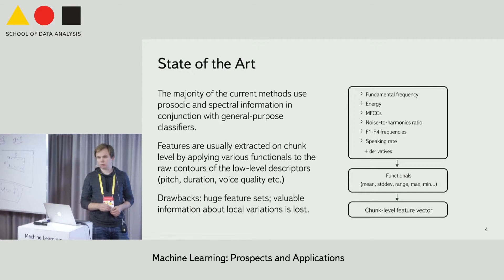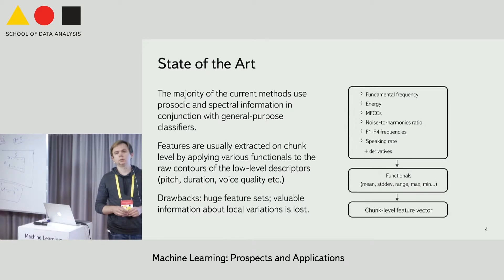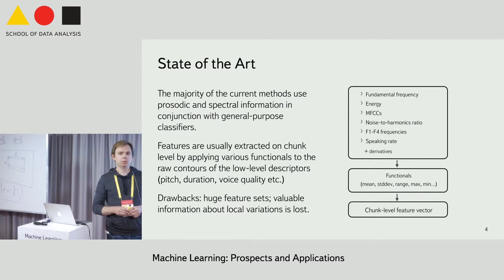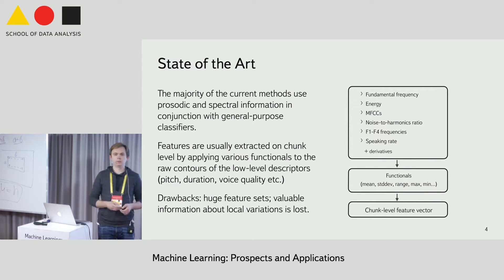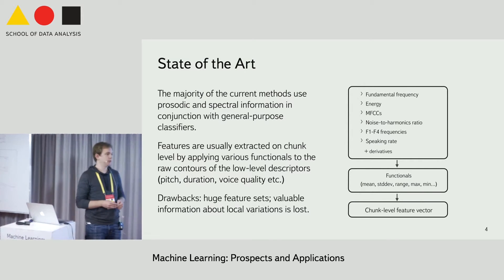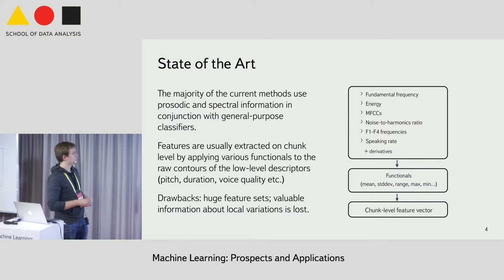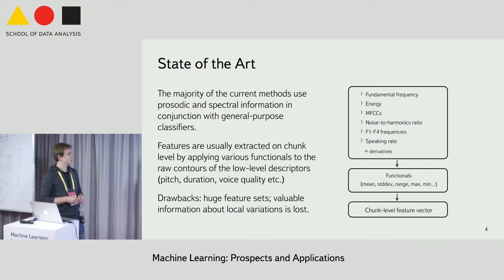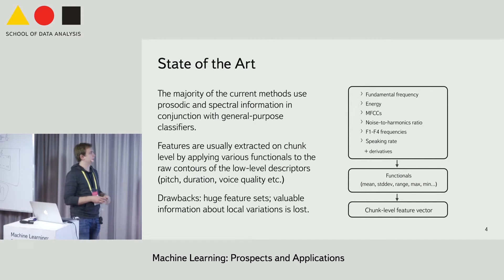What people usually do is shank-level analysis to recognize emotions, where the shanks are utterances, phrases, words, and even up to phonemes. Feature vectors for these shanks are usually extracted on the whole shank level.